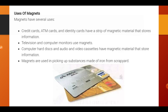Now let's discuss the uses of magnets. Magnets have several uses. Nowadays credit cards, ATM cards, and identity cards have a strip of magnetic material that stores information. Television and computer monitors use magnets. Computer hard disks and audio-video cassettes have magnetic materials that store information. Magnets are also used for picking up iron from scrap yards and by doctors in different therapies.